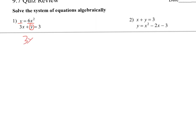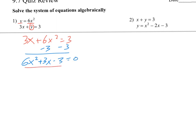Now there's nothing to distribute here, so I'm just going to write 3x plus 6x squared equals 3. I see that this is a quadratic, so I want to get everything to one side, so I'm going to subtract the 3 over. I'm also going to rearrange it in standard form, putting the x squared first. And I see that everything is divisible by 3, so I'll divide everything by 3, and I get 2x squared plus x minus 1 equals 0.